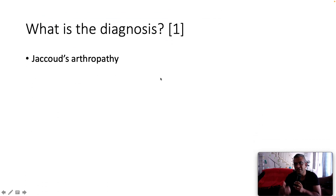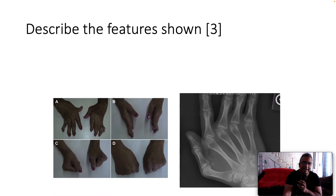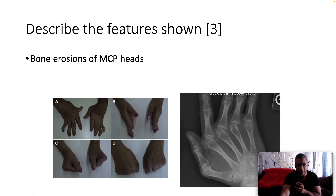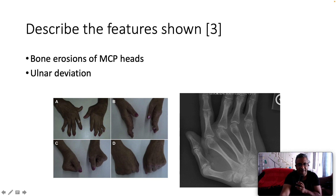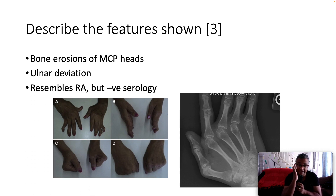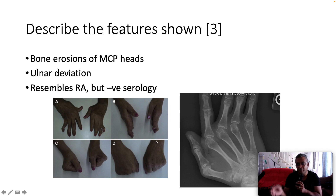The diagnosis is Jaccoud's Arthropathy. One of the features: we can see bony erosions at the metacarpal phalangeal heads on X-ray. And we see marked ulnar deviation at the metacarpal phalangeal heads, at the MCP heads. We don't really see any synovitis because the patient is able to make a fist, so we know this is non-deformative.